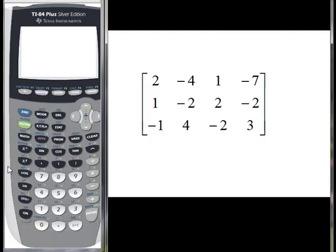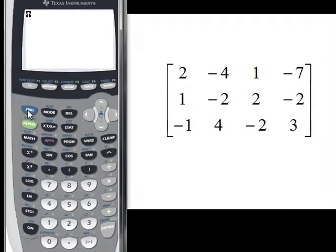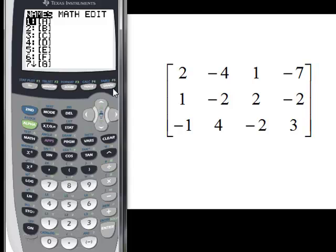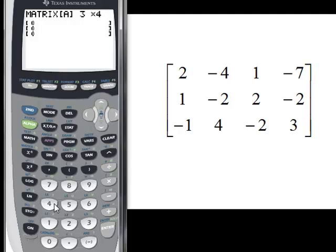So in the calculator I'm going to do second matrix, and there's all my matrices. First thing I'm going to do is edit a matrix, so I go over to edit and let's go ahead and put this in A, and we're going to do three rows by four columns because that's what our augmented matrix is.